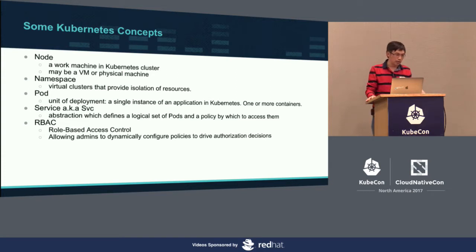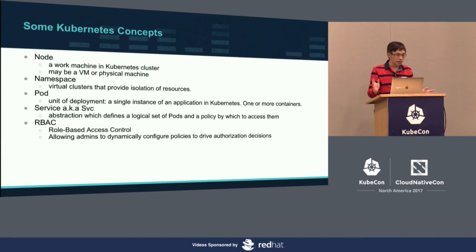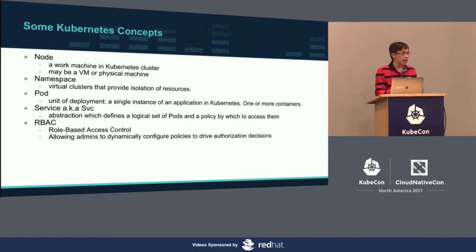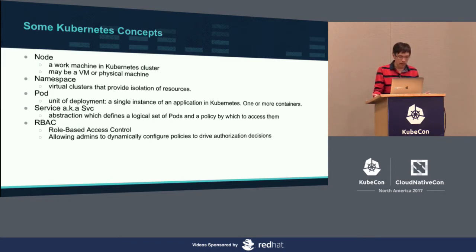In Kubernetes terminology: a node is either a physical machine or a virtual machine. A namespace is a virtual cluster—it provides isolation of resources, and we need namespaces because that's how we can do multi-tenancy; one tenant cannot see the other tenant's resources. A pod is the unit of deployment, a single instance of an application in Kubernetes with one or more containers. A service is the abstraction for how you expose your services to the outside. And RBAC is the role-based access control we use to do enforcement.